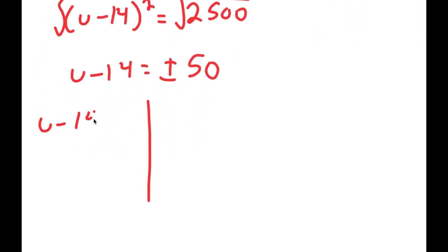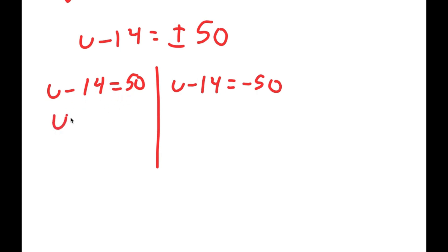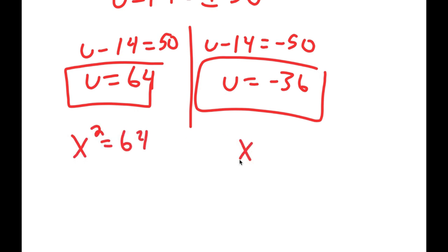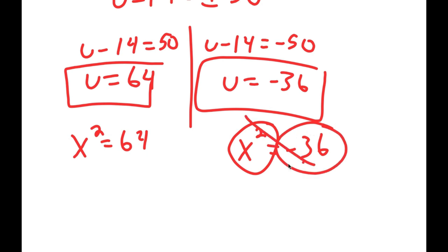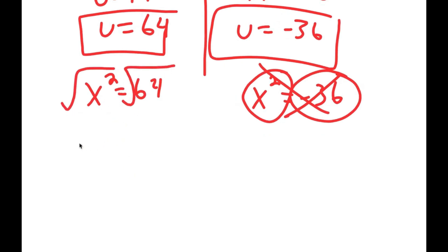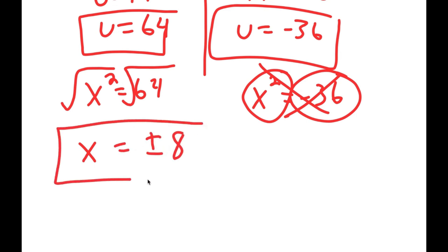This gives two equations: u minus 14 equals 50, so u equals 64; and u minus 14 equals negative 50, so u equals negative 36. Since u equals x squared, x squared equals 64 or x squared equals negative 36. A number squared can't equal a negative number, so x squared equals 64 is the only real solution, giving x equals positive or negative 8.